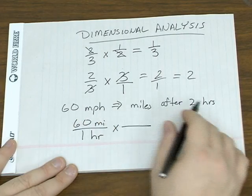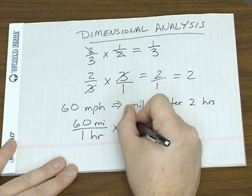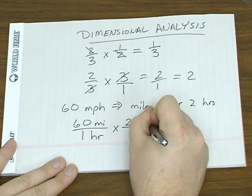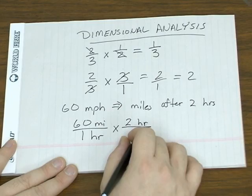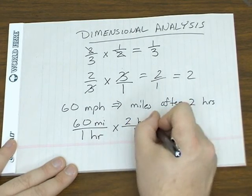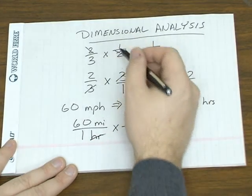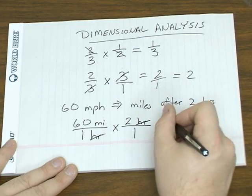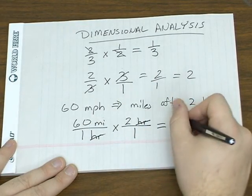And most people would look at this automatically and say, okay, you go 60 times 2. But the reason you multiply is because when you multiply it by 2, and we'll write it as a fraction, the hour unit cancels out just like the threes and the twos did over here. So the only unit left is the unit you want, which is miles.